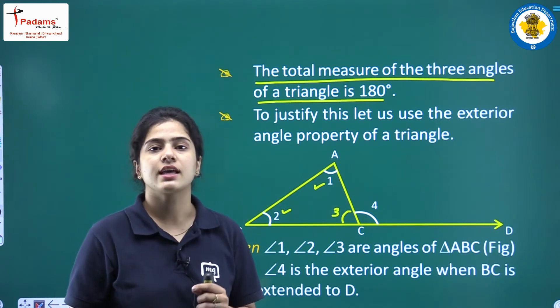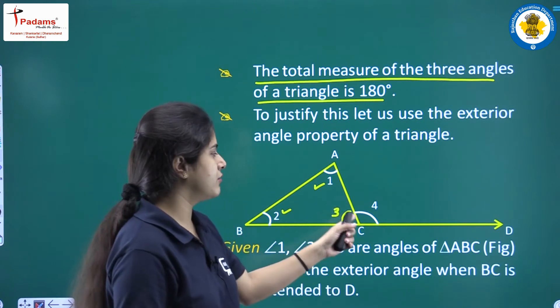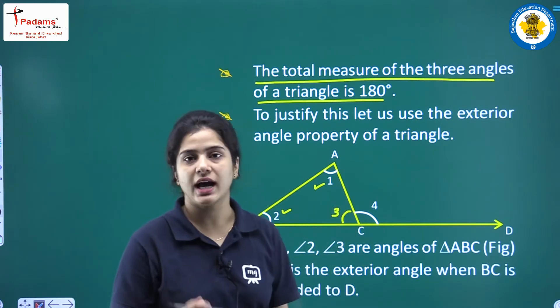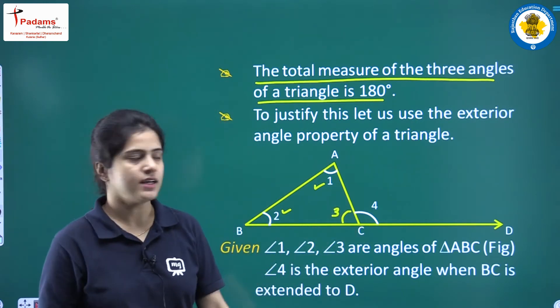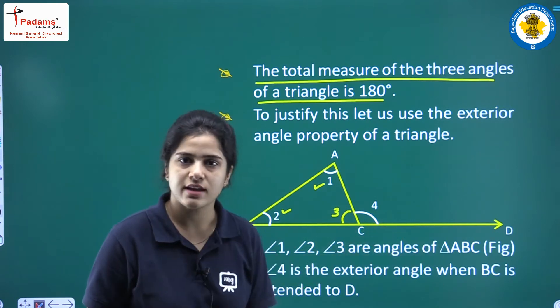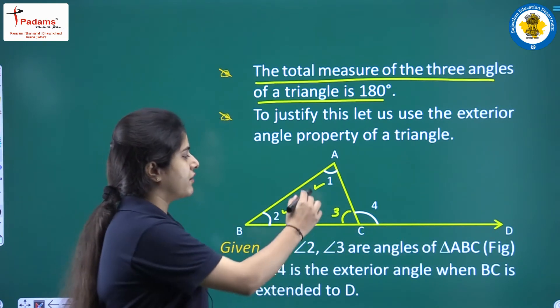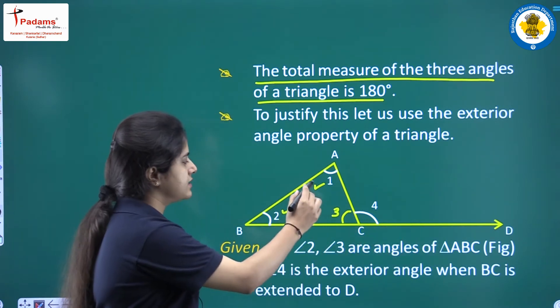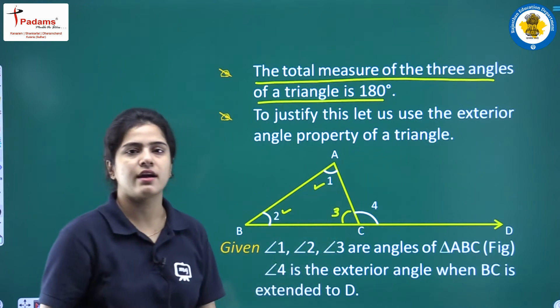Those three angles are formed inside the triangle, and angle 4 is the exterior angle of the triangle. So angle 4 is the exterior angle of triangle ABC, whereas the interior angles are angle 1, angle 2, and angle 3.